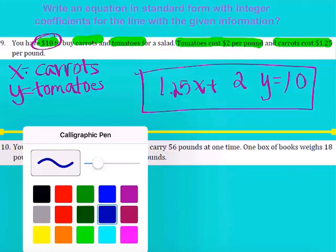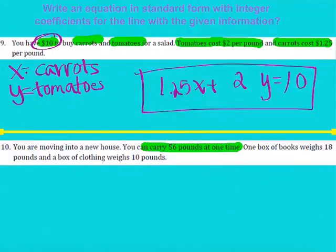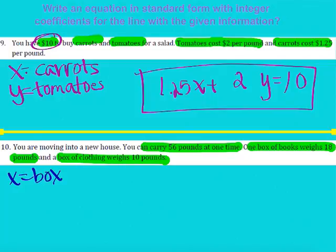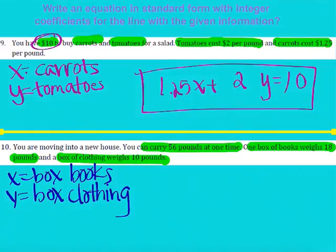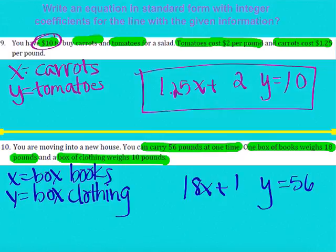Now let's take a look at number 10. You are moving into a new house. You can carry 56 pounds at one time. One box of books weighs 18 pounds, and a box of clothing weighs 10 pounds. Let X represent a box of books and Y represent a box of clothing. We have 56 pounds we can carry in total, and we'll pretend we're carrying 56 pounds every time. For every X box of books it weighs 18 pounds, and for every Y box of clothing it weighs 10 pounds. That's your final answer for number 10.